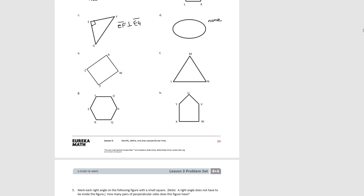Pause the video and try E. Even though this shape is rotated on its side, it's still a rectangle, and there are still right angles at each of the intersections. So we have AZ is perpendicular to AW. We have AW is perpendicular to WF. WF is perpendicular to FZ. FZ is perpendicular to ZA.